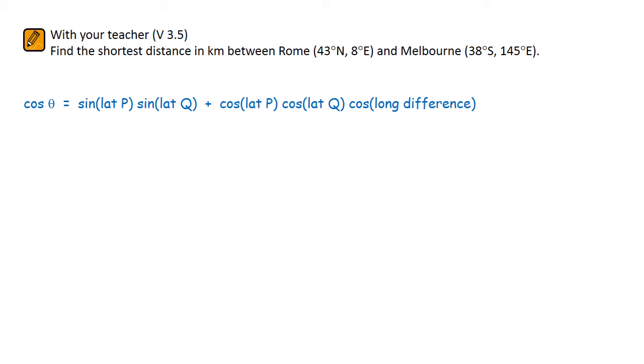We have the latitudes but we need to find out the longitude difference which can be found using a plan view. Rome is 8 degrees east of the prime meridian and Melbourne is 145 degrees east of the prime meridian. This is the angle that we need and it can be found by subtracting the two longitudes. The longitude difference is 137 degrees.